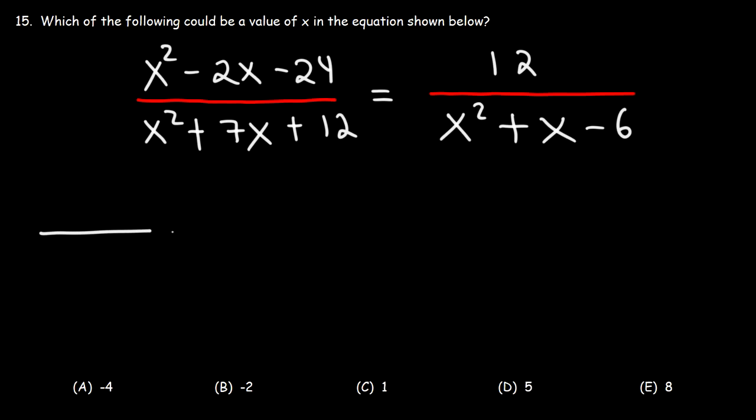Let's begin by factoring the first expression, x squared minus 2x minus 24. So let's look for two numbers that multiply to negative 24, but add to negative 2. So this is going to be negative 6 and positive 4. So I'm going to write it as x minus 6 times x plus 4.